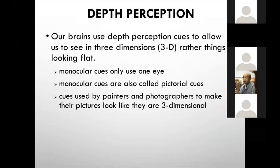Our brain uses depth perception cues to allow us to see in three dimensions. Our retina — the back of our eye where our photoreceptors are located — is a two-dimensional surface, yet we see in three dimensions. One set of cues we use only requires one eye, and these are called monocular cues. Monocular cues are also called pictorial cues because these are the types of cues that painters, artists, and photographers use to make a picture look three-dimensional instead of flat.